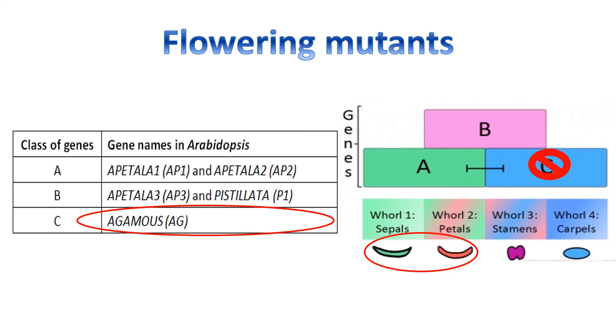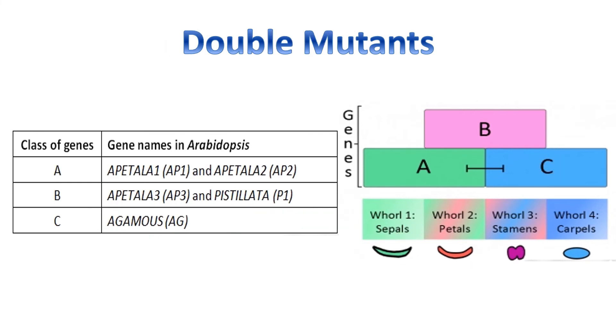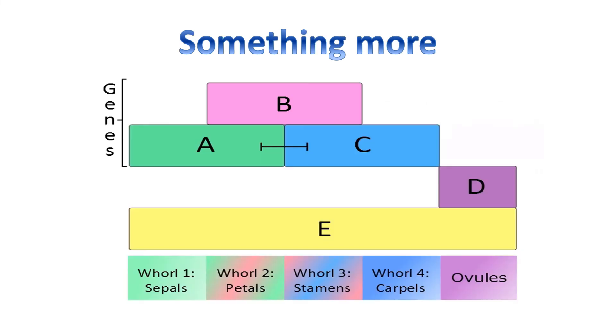We can have a double mutant of any of the three classes. You can still easily tell the phenotype for any double mutant and the genes responsible. Suppose we have a double mutant for class B and C, then the mutant will only have sepals, and the genes responsible will be APETALA3, PISTILLATA, and AGAMOUS.